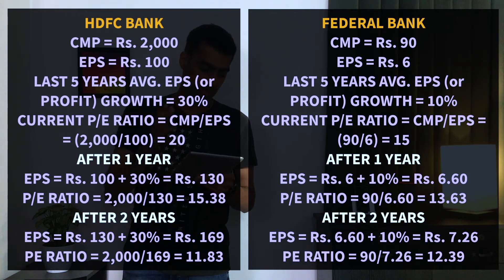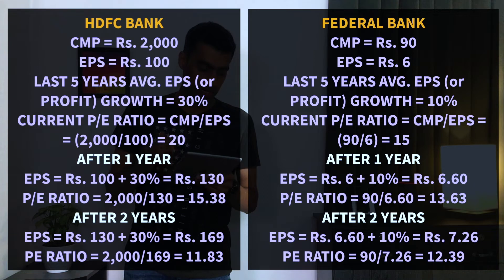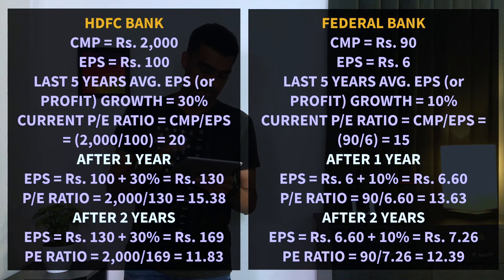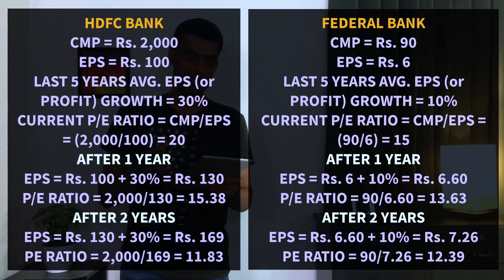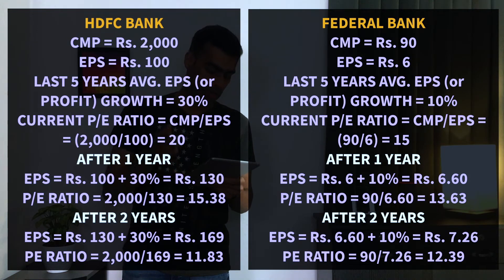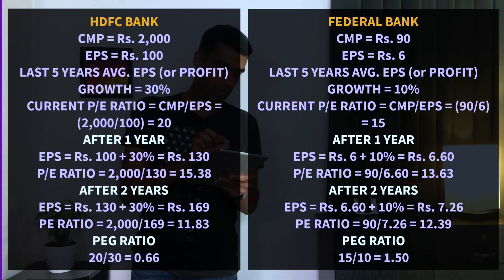Next year, with 10% earnings growth, EPS becomes 6.6, so the PE multiple is 90 divided by 6.6, which equals 13.63. The year after, EPS grows to 7.26, so the PE multiple is 90 divided by 7.26, which equals 12.39. The current PE multiple stands at around 15, and with 30% growth the PEG comes to approximately 0.66.